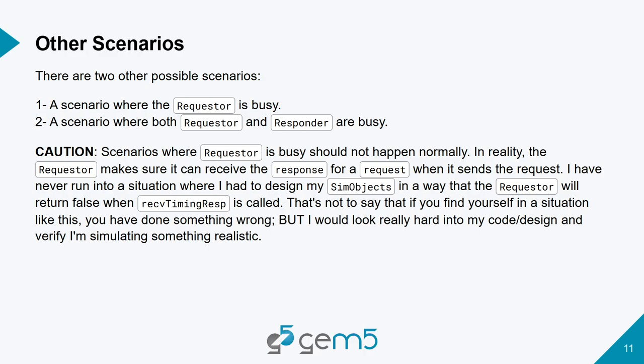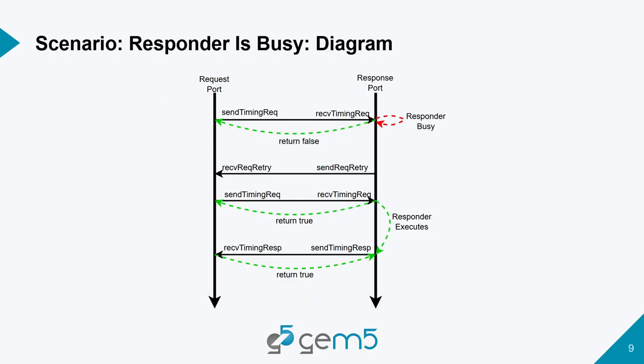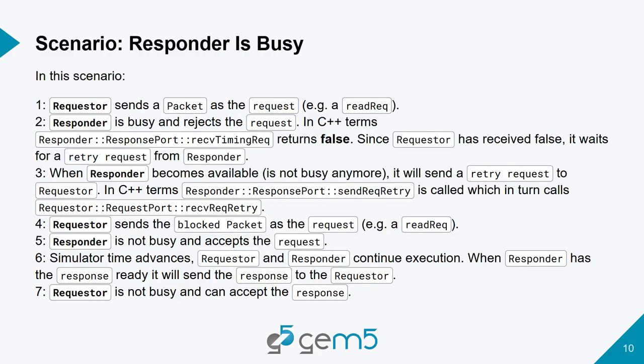There are also scenarios where the requester cannot receive the response because it's busy. From a practical standpoint, usually the requester makes accommodations so that when the response is ready, it's also ready to receive it. But that scenario is still possible to model in gem5. There's also a scenario where both requester and responder are busy, and there will be some point in the transaction where they communicate.